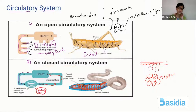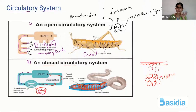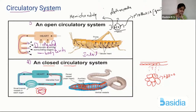In Echinodermata, we have a special mechanism — a water canal system — so when I discuss Echinodermata you'll get clarification on that. To confirm: HARM — Hemichordata, Arthropoda, and few Mollusca — these three are having open circulatory system. Is your doubt clear? Yes. Okay, next concept.